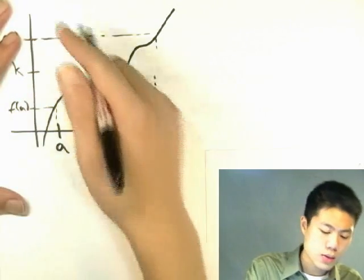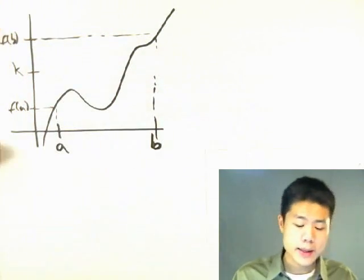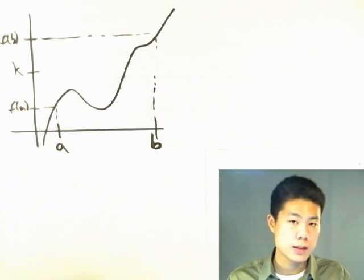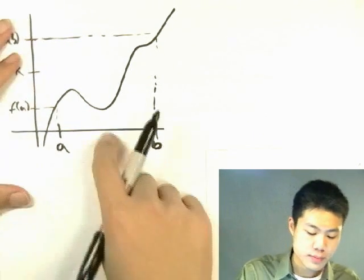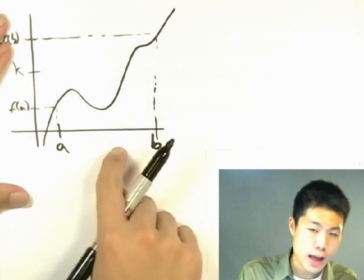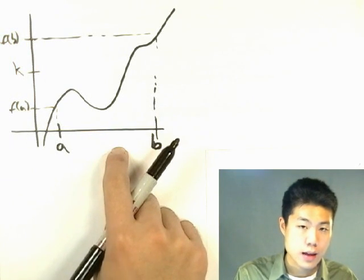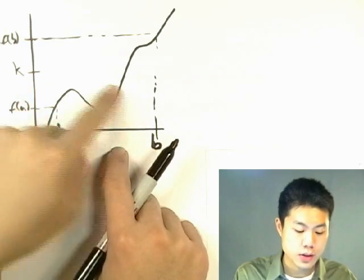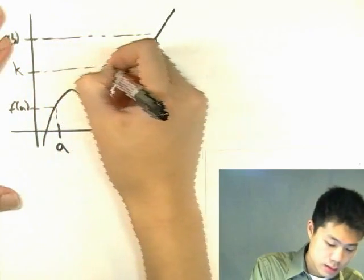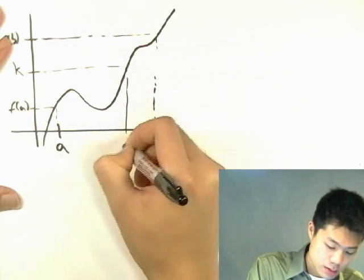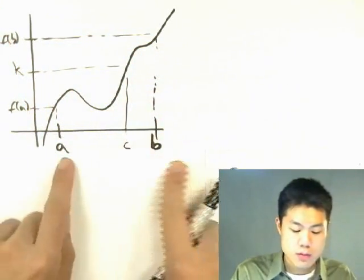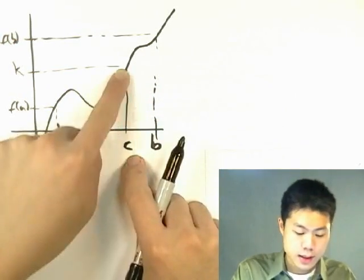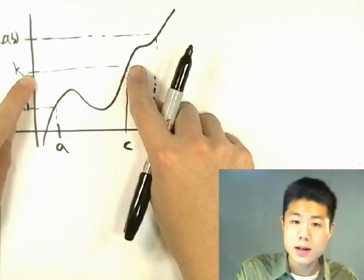Let me repeat that. This theorem tells us that there's going to be at least one number c. We're going to call this number c, and at f(c), that's going to equal k. So at c, the function is going to equal k. There's going to be one number between a and b called c, and at this c value, the function is going to have a value k. So f(c) is going to equal k.